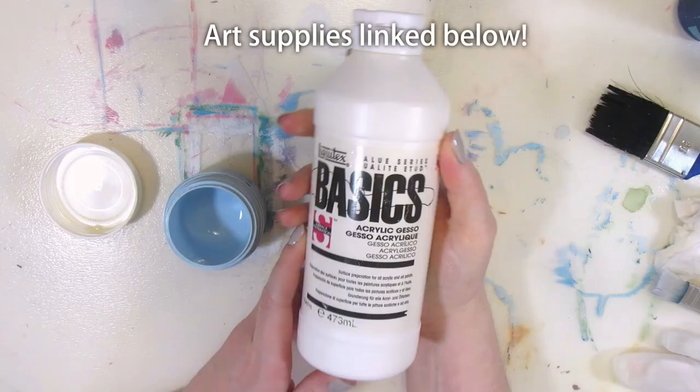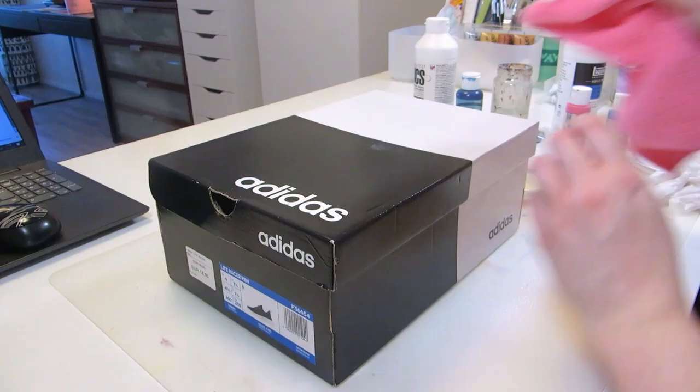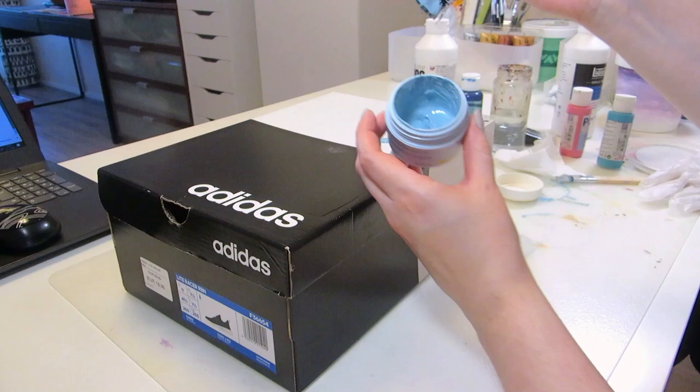I first primed the shoebox with gesso to prepare it for painting and prevent the cardboard from soaking up too much paint. I mixed in some blue acrylic paints to tint the white gesso so I could also get the background painted blue at the same time.